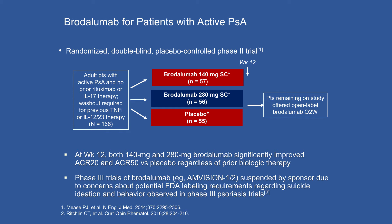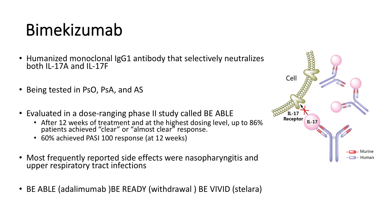Brodalumab had a rocky start — many of you may recall that when it first launched, there were increased risks of mental health issues and suicidality in the active arm, and it was only approved in certain areas. They have mitigated some of that risk and are moving forward with trials in psoriasis, psoriatic arthritis, and ankylosing spondylitis. Bimekizumab is also in the IL-17 family, but blocks both IL-17A and IL-17F. It is a monoclonal IgG antibody being tested in all three diseases and showing up to 60% PASI-100 achievement.